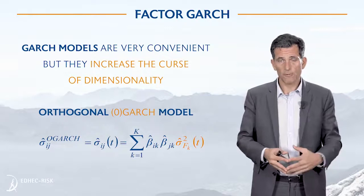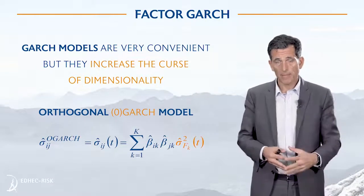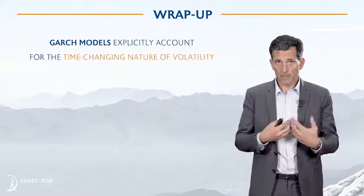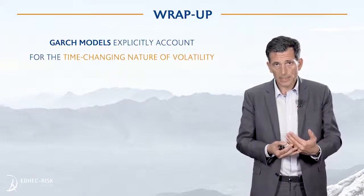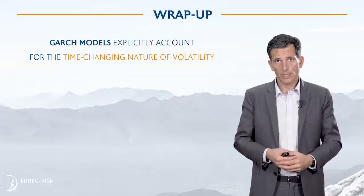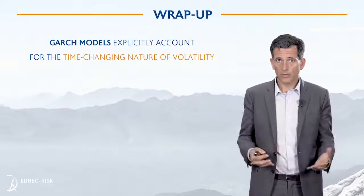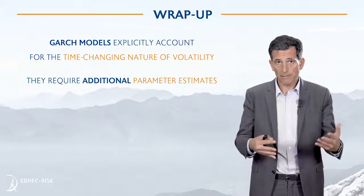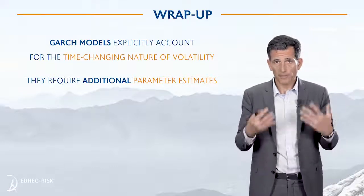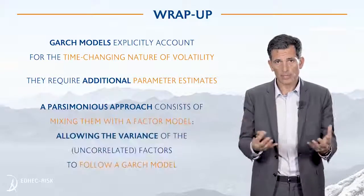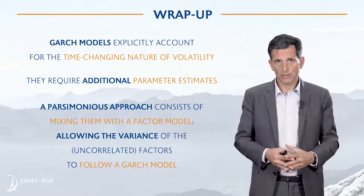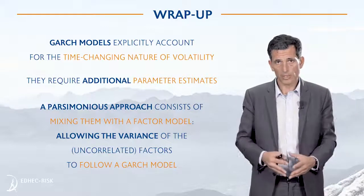You could also allow for time variation in the beta parameters as well, but that would introduce more parameters. To wrap up: GARCH models are very convenient because they explicitly account for time variation in risk parameter estimates. The drawback is that they require estimating even more additional parameters, so you need a parsimonious approach — the most parsimonious being a factor model, and potentially an orthogonal factor model.